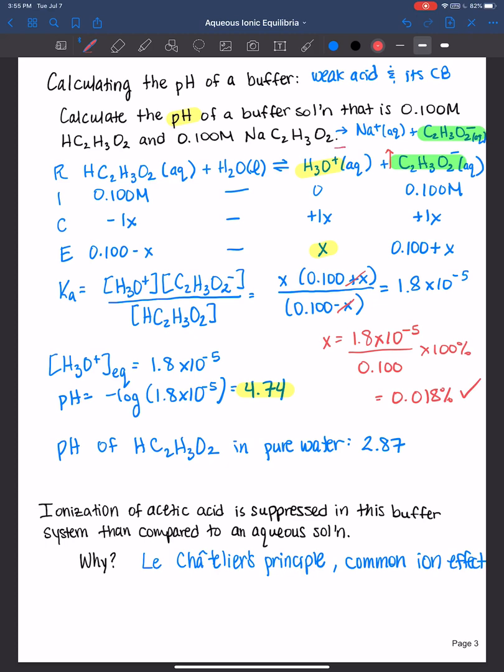The equilibrium shifts to the left. And so that means that less of the acetic acid is able to dissociate, is able to ionize due to this common ion effect. So we added a common ion. It suppressed the equilibrium. It shifted it to the left based on Le Chatelier's